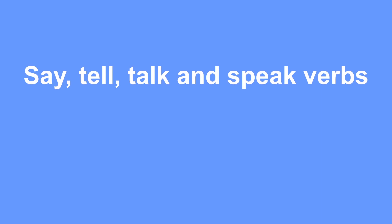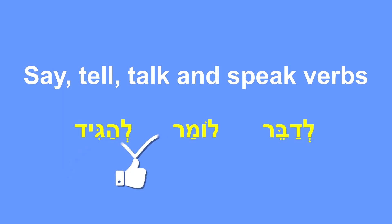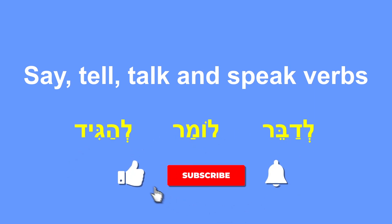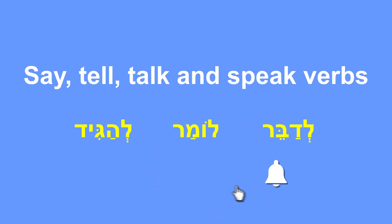That's it for today. We finished with part 2. Part 1 was about the verb Ledaber. Part 2 was about the verb Lomar. And the third part, the final part, will be about the verb Leagid. I hope that you found this video educational and now you know the difference between the verbs Ledaber and Lomar. I hope you enjoyed, and if you did, don't forget to leave a like, click on the subscribe button, and click on the notification bell so you won't miss any of my videos. Lehitraot!